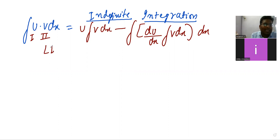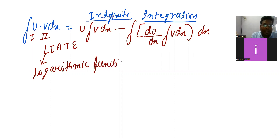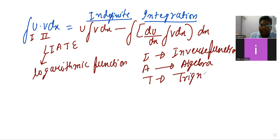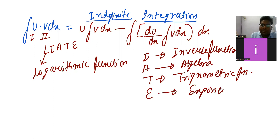For that I will use the ILIATE rule: I for inverse function, L for logarithmic function, A for algebra, T for trigonometric function, and E for exponential function. Based on this formula, we will solve one numerical.